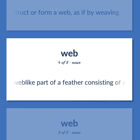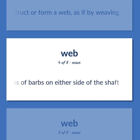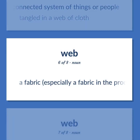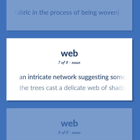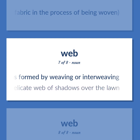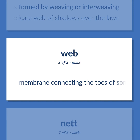The flattened web-like part of a feather consisting of a series of barbs on either side of the shaft. An interconnected system of things or people. Tangled in a web of cloth. A fabric, especially a fabric in the process of being woven. An intricate network suggesting something that was formed by weaving or interweaving. The trees cast a delicate web of shadows over the lawn. Membrane connecting the toes of some aquatic birds and mammals.